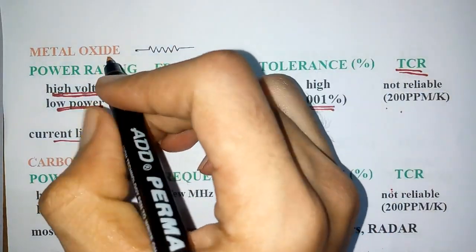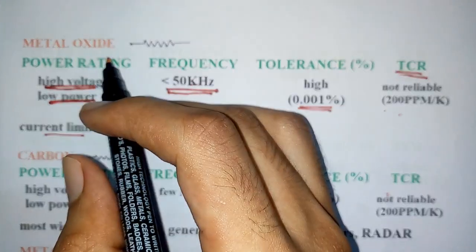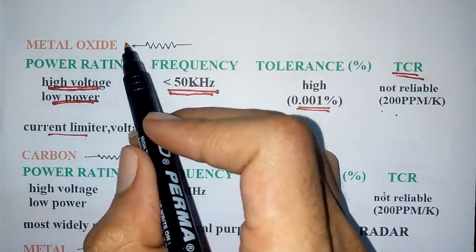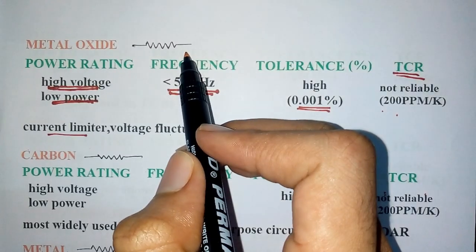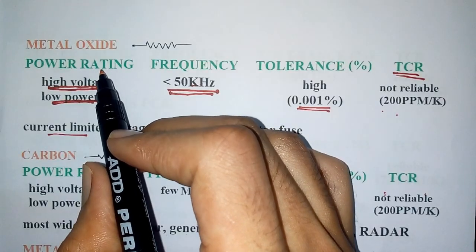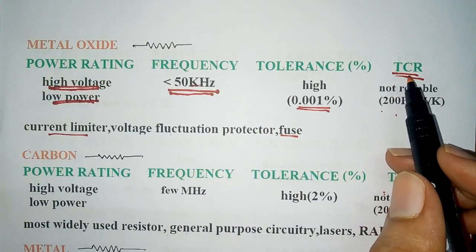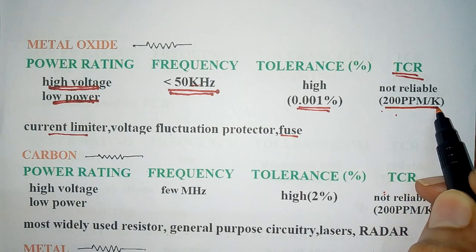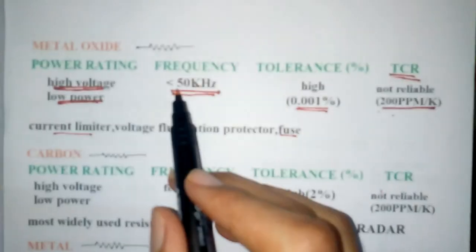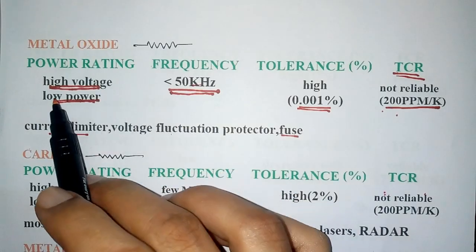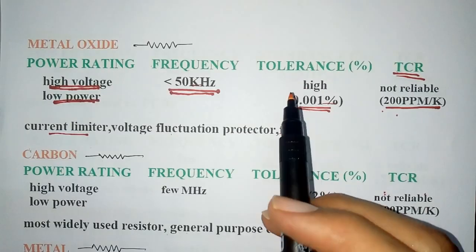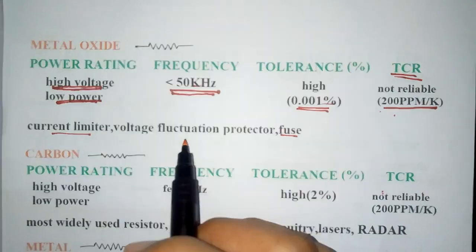Next comes metal oxide resistor. Its construction is metal oxide resistor on a ceramic base. Its symbol looks like the ordinary resistor, general symbol. Like the previous resistor, its main drawback is its TCR, 200 ppm per Kelvin, similar to cermet resistor. This is very rarely used and less preferred because it has less frequency stability and low power rating. But its tolerance value is very high. It is used in current limiters, spike protection, and fuses.